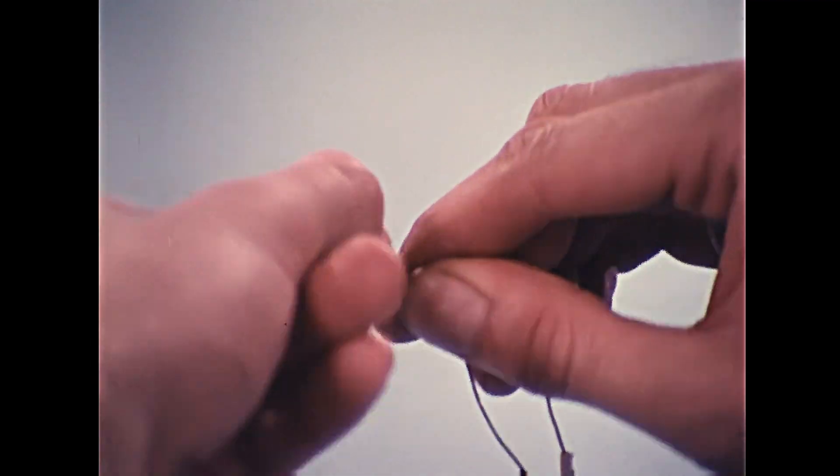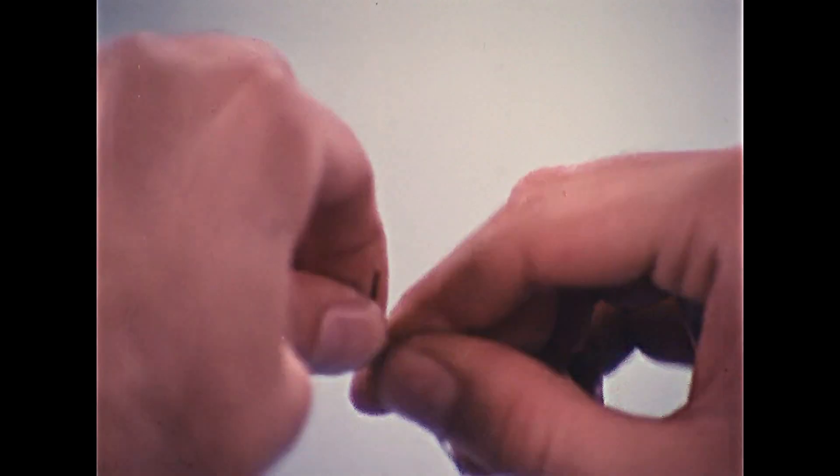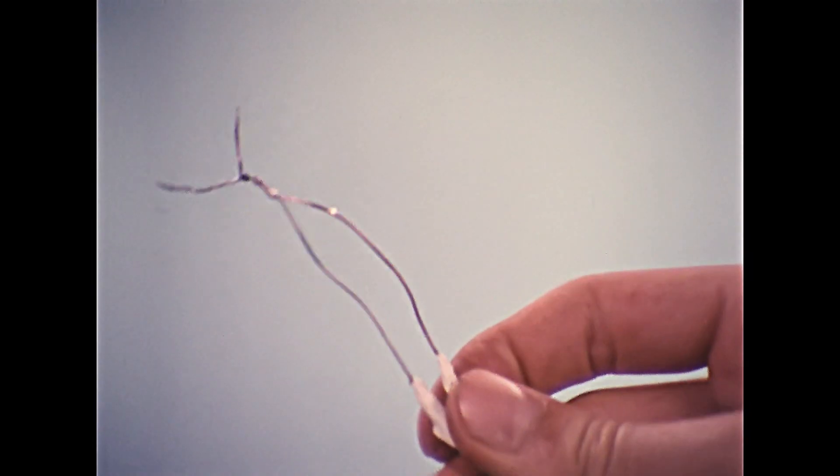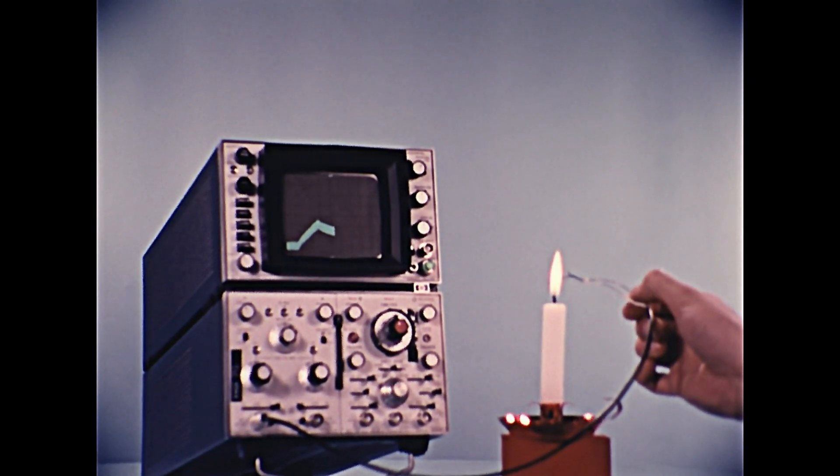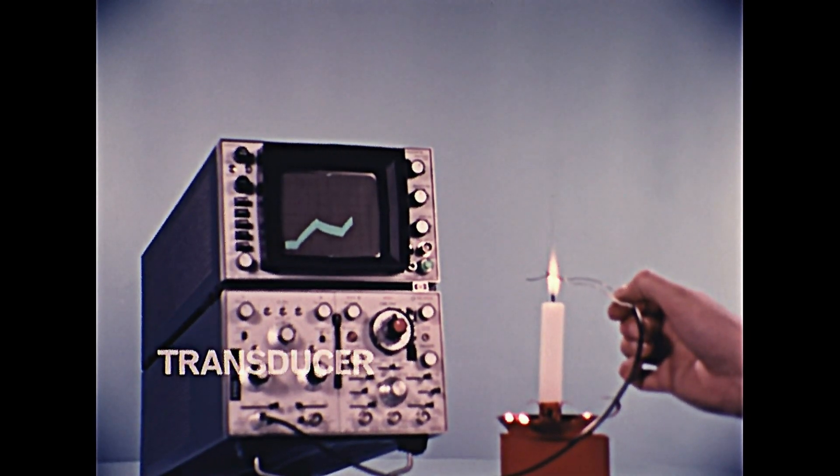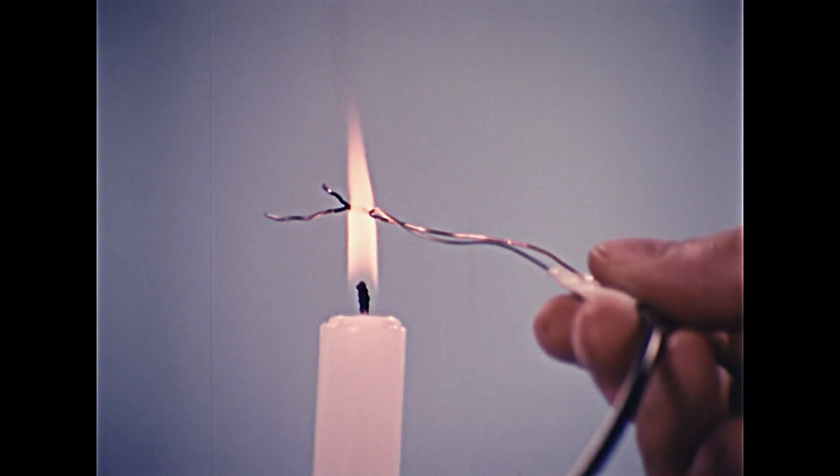These twisted wires produce a small amount of voltage when heated. Since the oscilloscope responds only to voltage, this simple thermocouple is a transducer, allowing us to plot temperature against time on the oscilloscope.